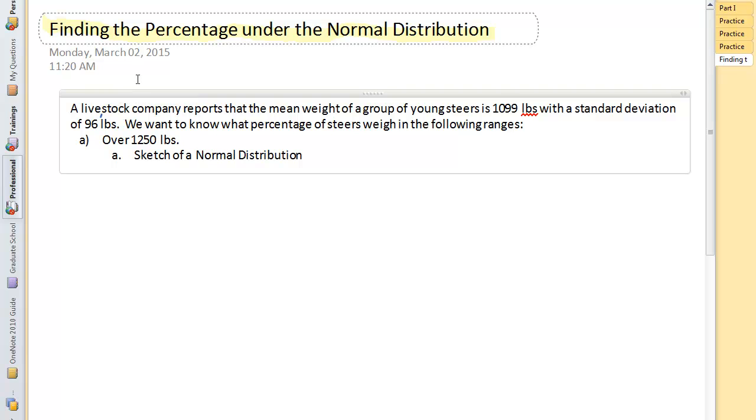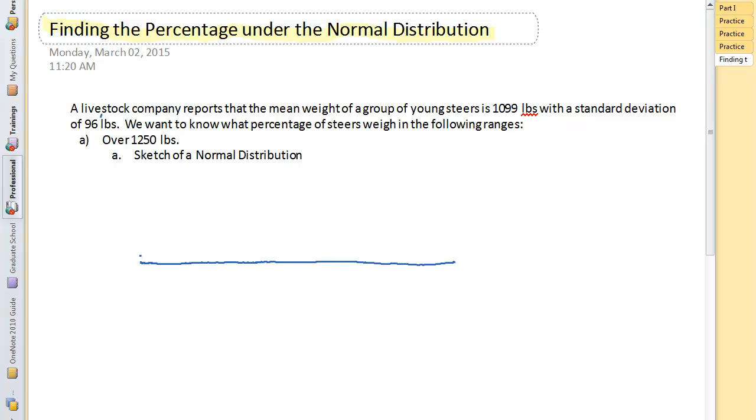The first thing you want is a sketch of the normal distribution. I'm going to try to draw the sketch with a horizontal line and that nice normal curve that's unimodal and comes down and gets close to the axis. Right in the middle is the mean, and that's 1,099 pounds. Then here where I've got this point of inflection, that's going to be my first standard deviation.